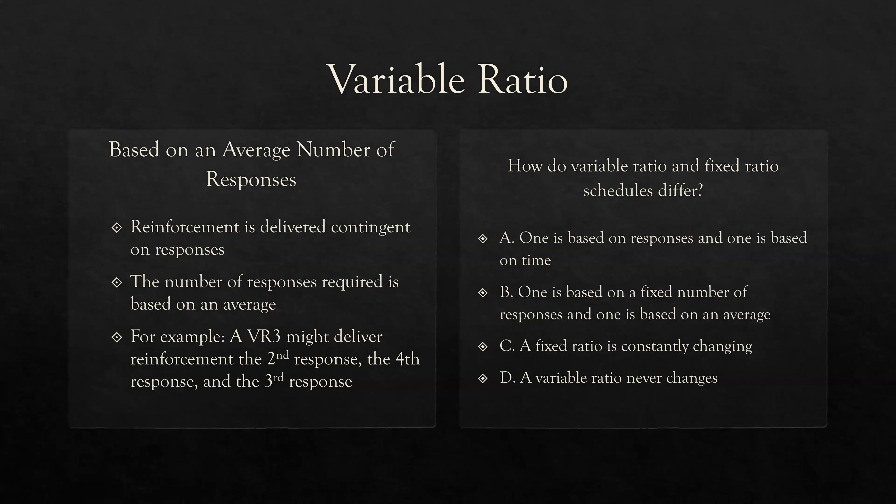So how do variable ratio and fixed ratio schedules differ? They're both based on a number of responses. A: one is based on responses and one is based on time — not true, they're both responses. B: one is based on a fixed number of responses and one is based on an average — yes. The fixed ratio is on a fixed amount of responses; the variable ratio is on an average. C: a fixed ratio is constantly changing — incorrect. D: a variable ratio never changes — also incorrect. The answer is B.